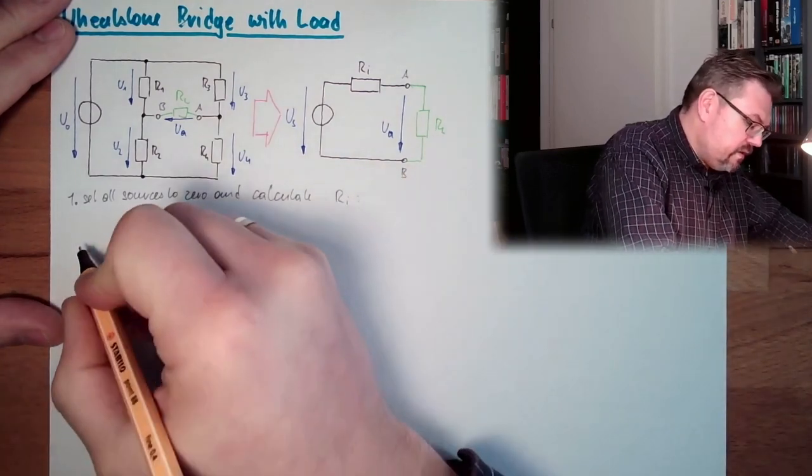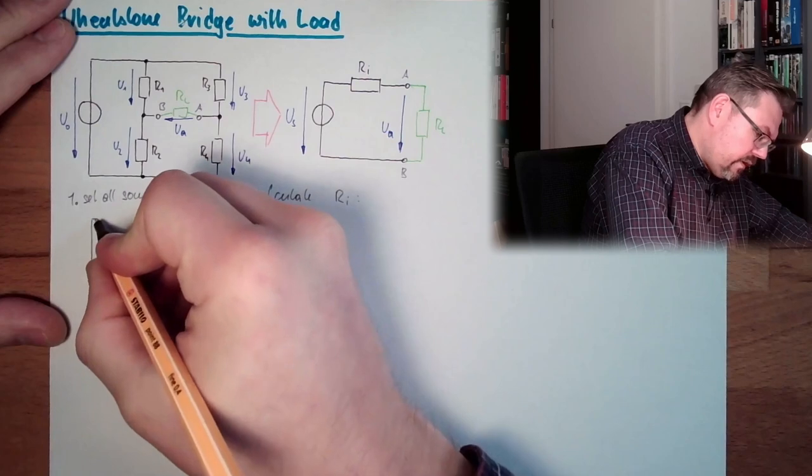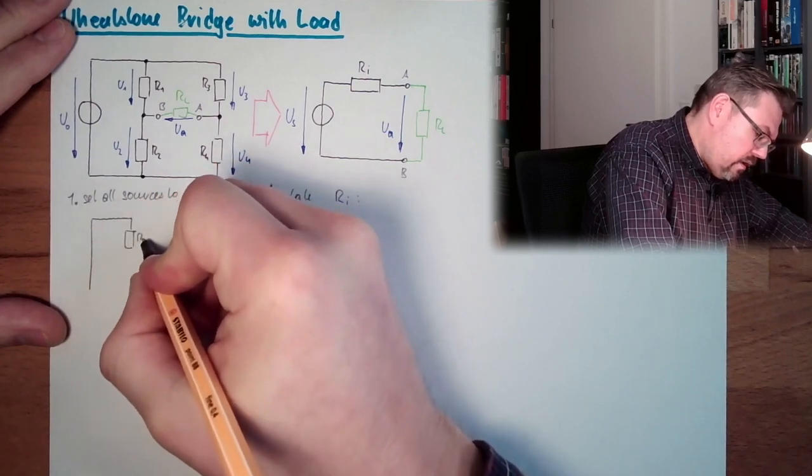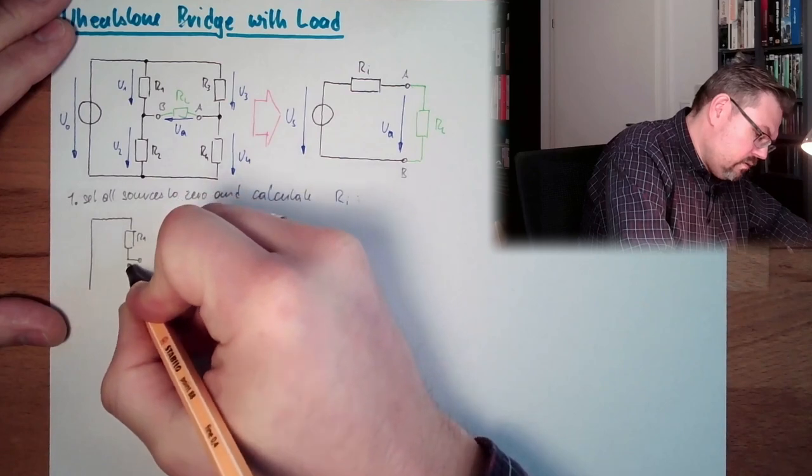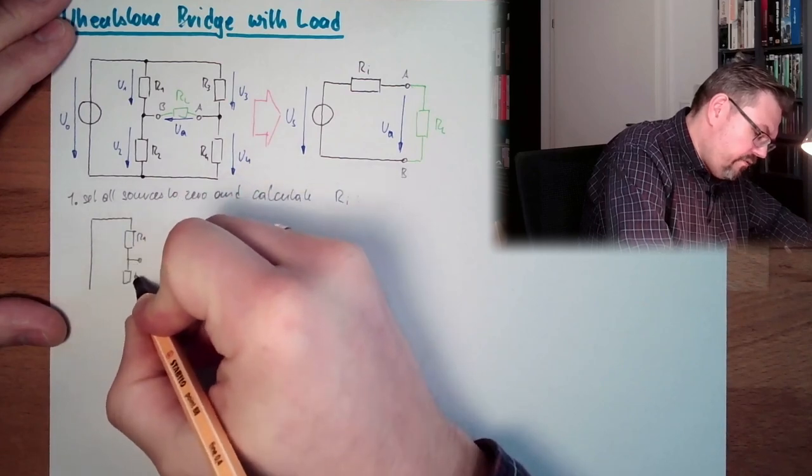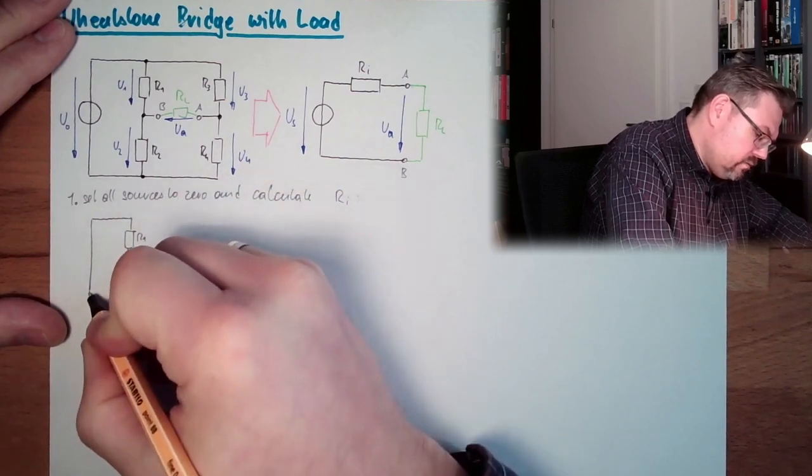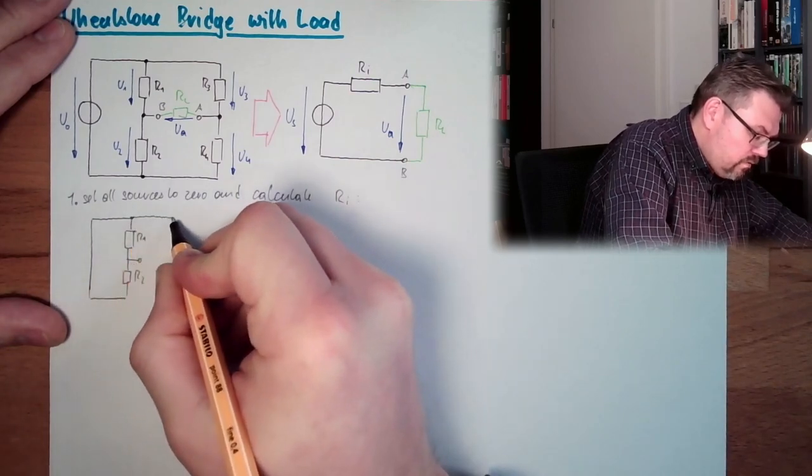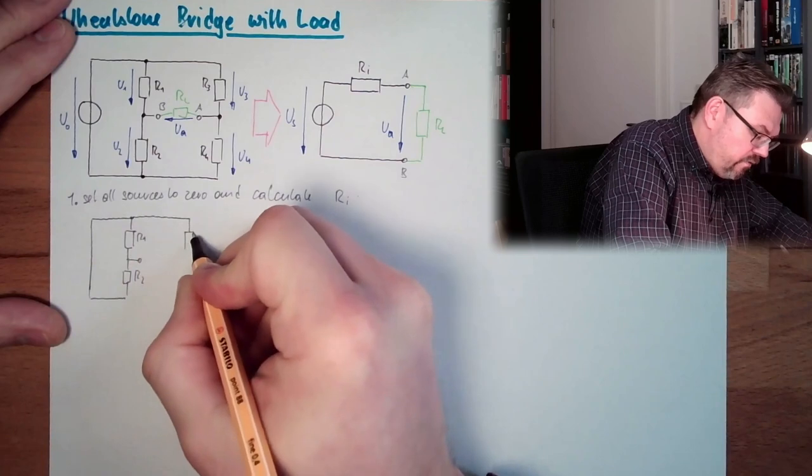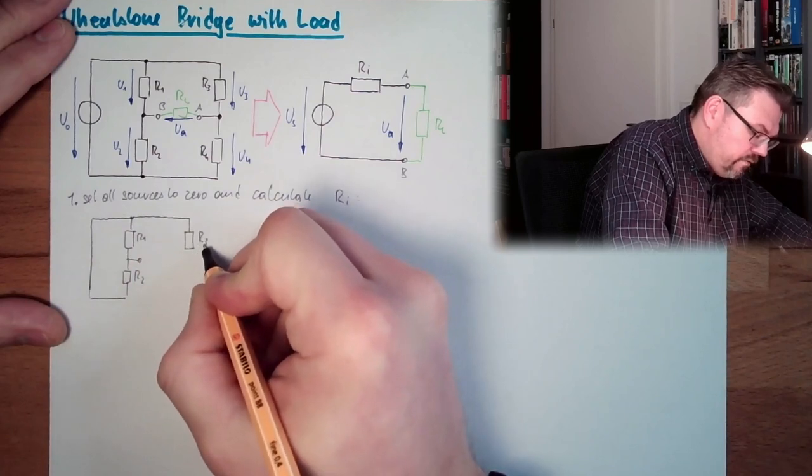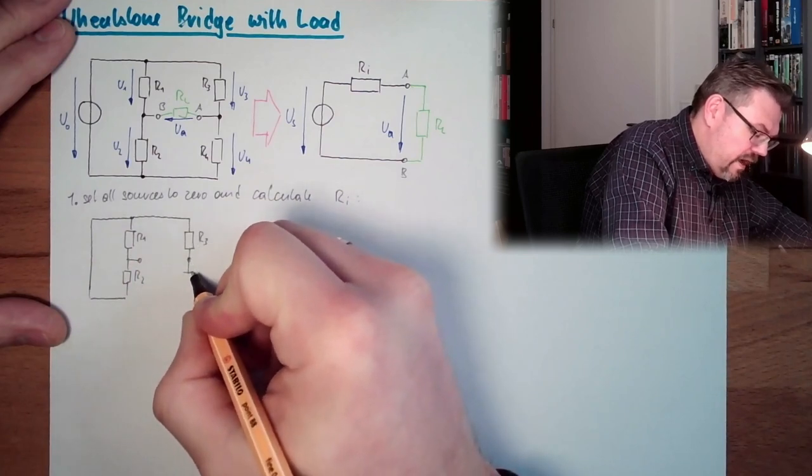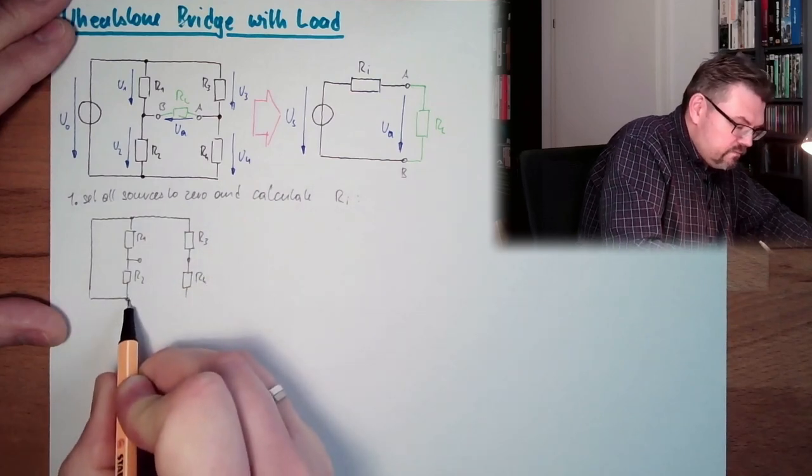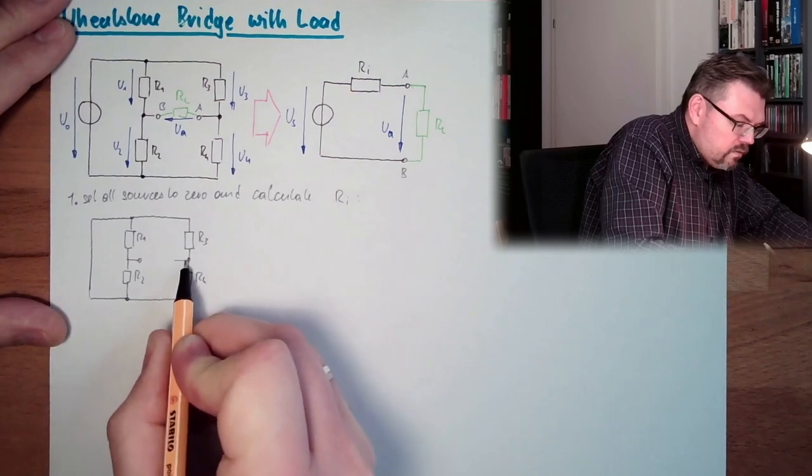So setting the voltage source to zero looks like that. We have here R1, we have here R2, we have here R4, R3 of course—I was ahead of my time—and here R4.